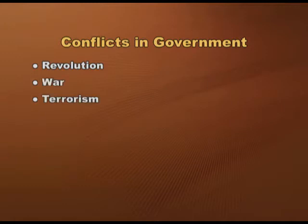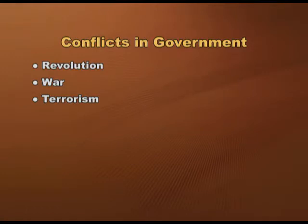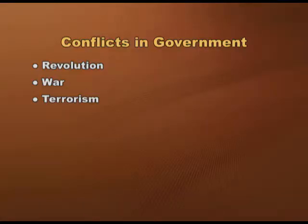Conflicts in government are mainly of three types: revolution, war, and terrorism. In a revolution, the government is overthrown by its citizens, often sparked by charismatic philosophers and intellectuals who motivate others to participate. War is an armed conflict between nations or societies, waged over rights to land and resources or due to conflicting moral, political, or religious objectives. Terrorism is a politically motivated attack on civilians by an individual or group.